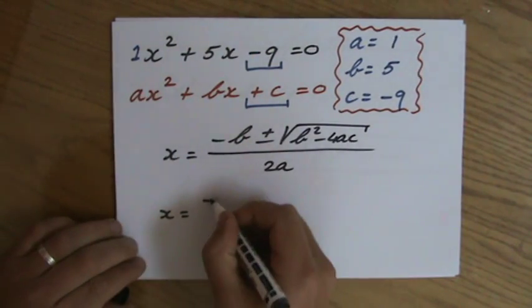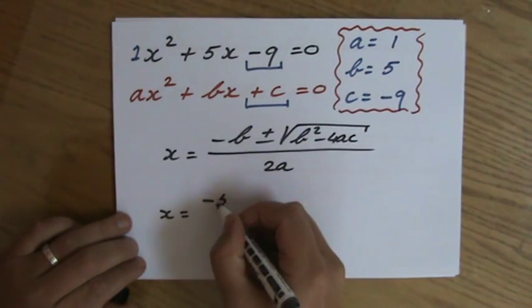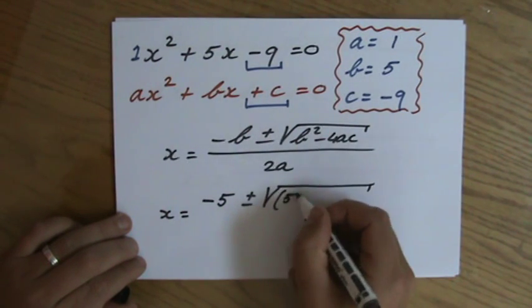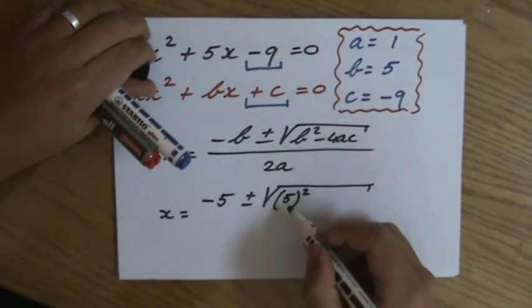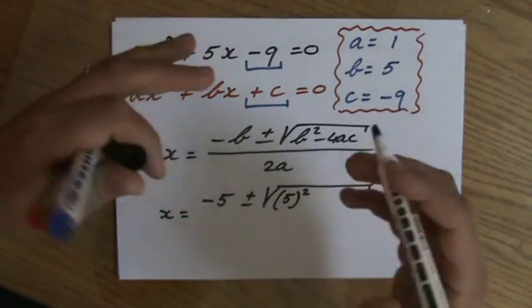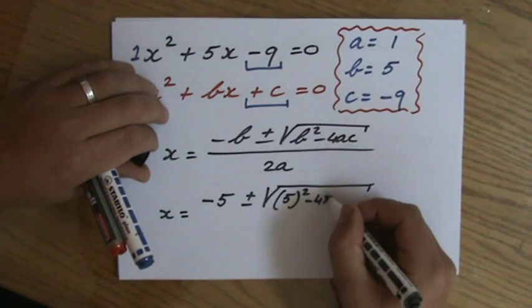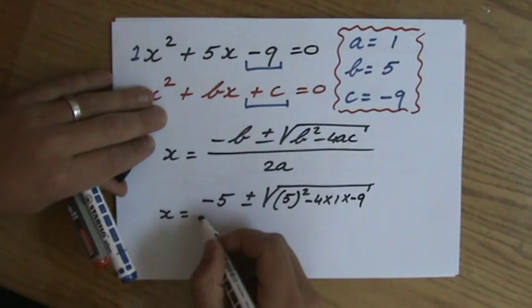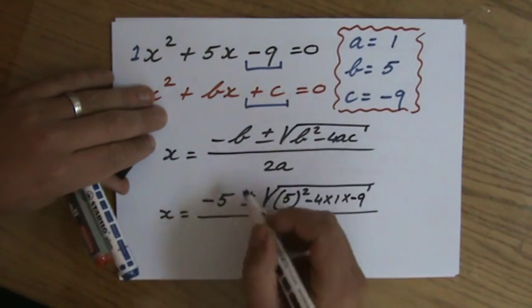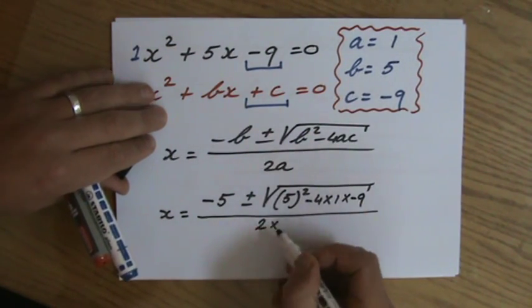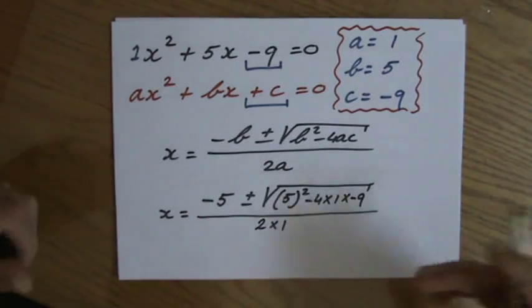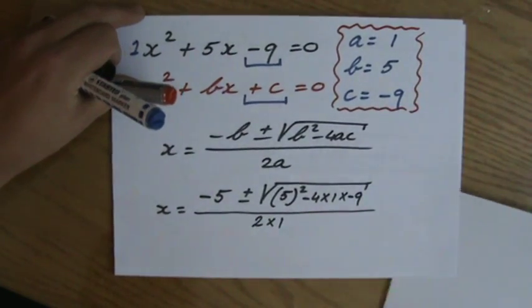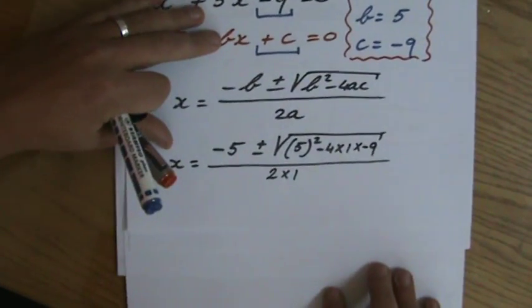Then you're going to substitute all the values. Minus five, plus or minus the square root - b² - I strongly encourage you to always do that in brackets, especially when b is a negative number. Put that in brackets, squared, minus four times a, one, times c, minus nine. And all of that divided by two times a, one. So I've substituted all those values in my ABC formula. Now I'm going to simplify that, I'm going to show my working.